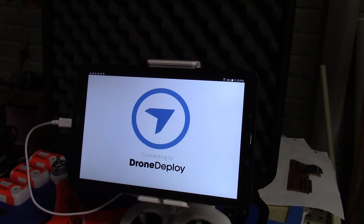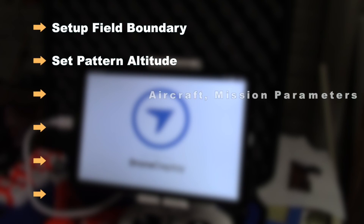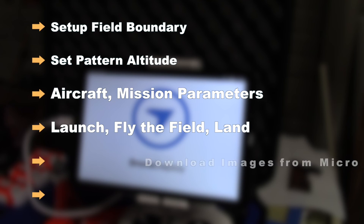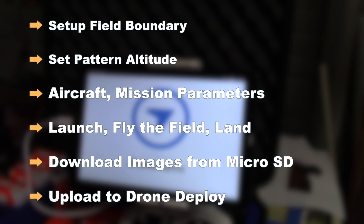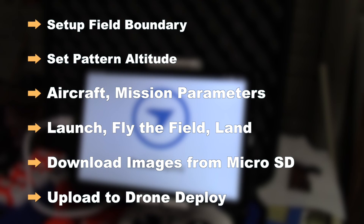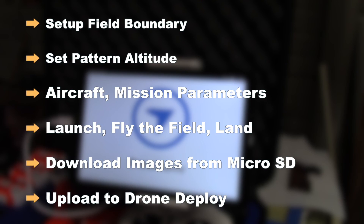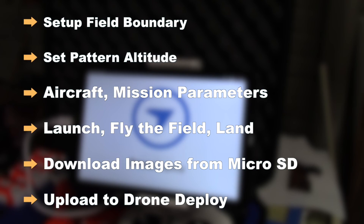The basic process through DroneDeploy is to set up a field boundary, set the pattern altitude, check all the aircraft and mission parameters, launch, fly the field, land, download images, and upload to the DroneDeploy website. Let's talk through each of these steps and the lessons I've learned.